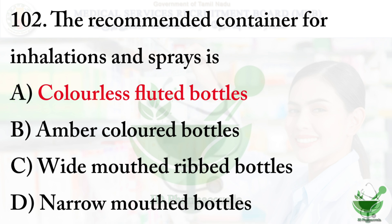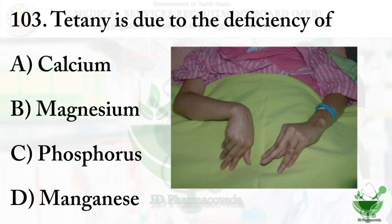Question number 103: Tetani is due to the deficiency of which of the following minerals? Option A: Calcium, option B: Magnesium, option C: Phosphorus, option D: Manganese. The right option is option A – Calcium.